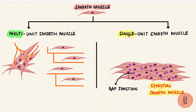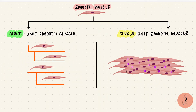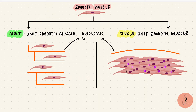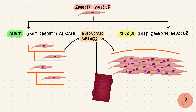Multi-unit smooth muscle cells have their own innervation, but for a sheet of cells in a single unit, the innervation is usually to the outer layer because it's going to spread anyway. The nerves in both cases are autonomic nerves. These nerves don't make direct contact with the cells, unlike skeletal muscle, where somatic nerves that supply them branch at their termination, forming a junction between the two.